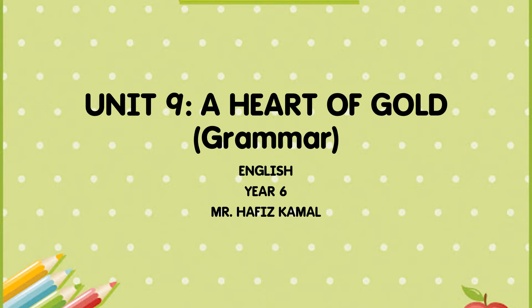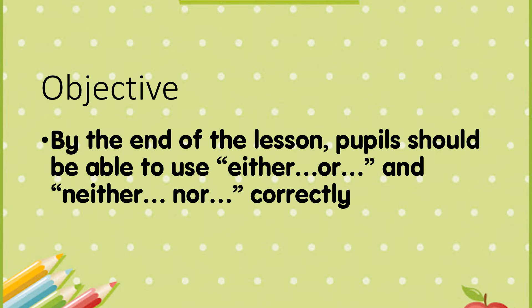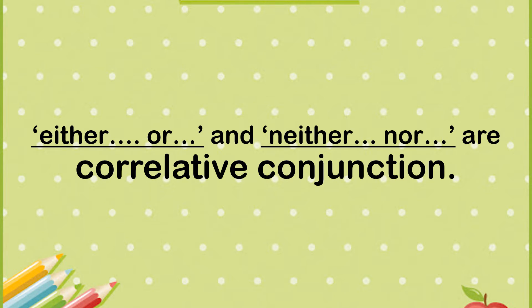The objective for today is that by the end of the lesson, students should be able to use either/or and neither/nor correctly. Either/or and neither/nor are correlative conjunctions — they are a part of conjunctions.